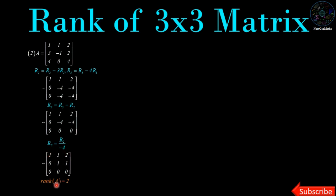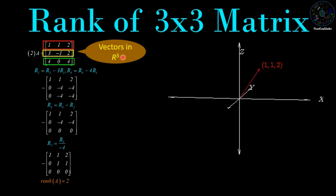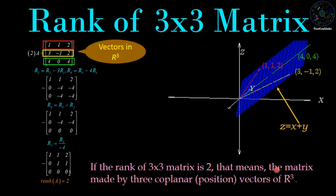Now we understand the geometry of rank 2. We consider every row as a vector of R3 and plot all three vectors: [1, 1, 2], [4, 0, 4], and [3, -1, 2]. All three lie on the plane z = x + y. We can verify: 1 + 1 = 2, then 4 + 0 = 4, and 3 + (-1) = 2. All three vectors satisfy this equation and lie on the plane z = x + y. Therefore, if the rank of a 3×3 matrix is 2, the matrix is made by three coplanar position vectors of R3.